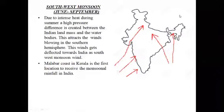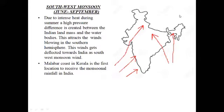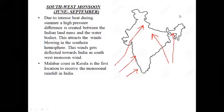The next topic is the southwest monsoon, or rainy season, which is from the month of June to September. During the monsoon season, due to intense heat during summer, a very high pressure difference is created between the Indian landmass and the surrounding water bodies. This attracts the winds blowing in the southern hemisphere, which after crossing the equator get deflected towards India as the southwest monsoon wind.